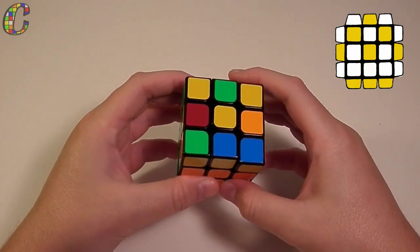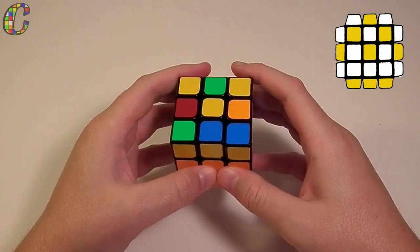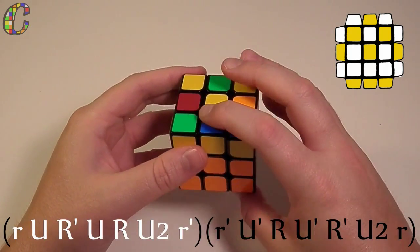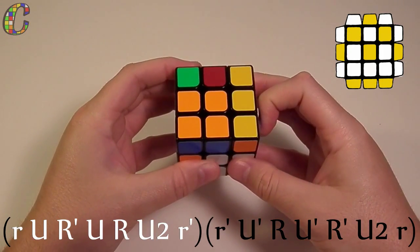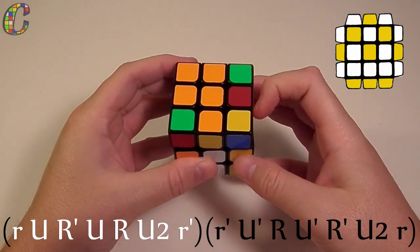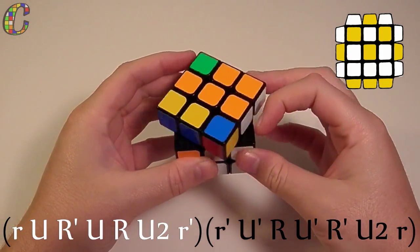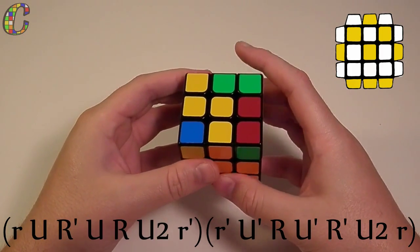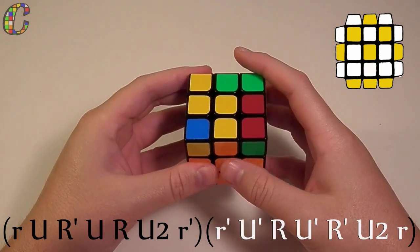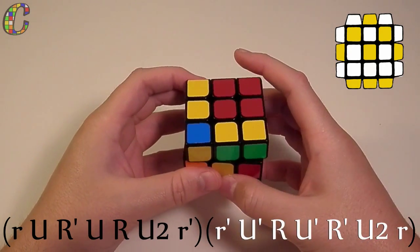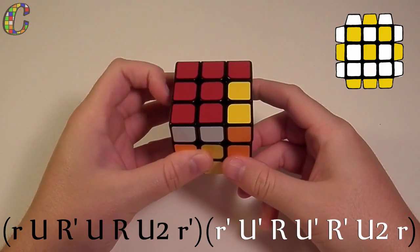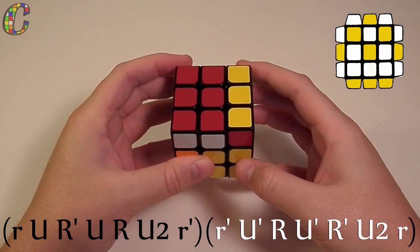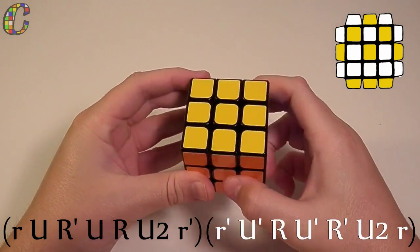Once you have the cube oriented like this, do the following algorithm. You do wide soon, so you do small r U R' U R U2 small r', and then you do wide anti-soon. So small r' U' R U' R' U2 small r.